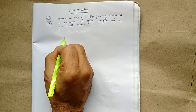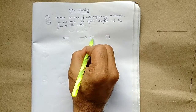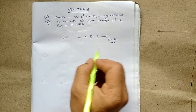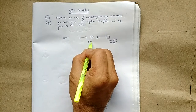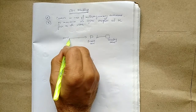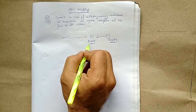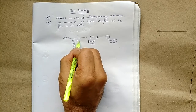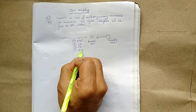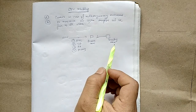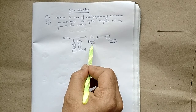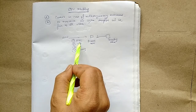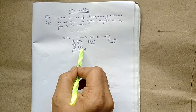To run a program, it must first be loaded into primary memory from secondary memory. From primary memory, the short-term scheduler selects a process and allocates it to the CPU using one of four algorithms: FCFS (First Come First Serve), Shortest Job First, Round Robin, and Priority.